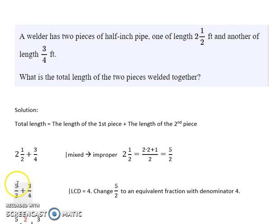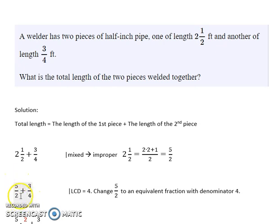So then we have five over two plus three over four. We're adding two fractions with unlike denominators. We need to find a least common denominator. The least common denominator in this case is four, because it's the smallest number that is divisible by both two and four — divisible by both denominators.